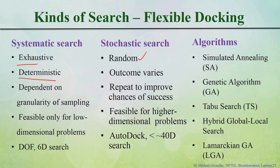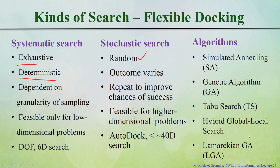The differences between systematic search and stochastic search: stochastic is random, systematic is exhaustive. Systematic can get the exact pose the ligand prefers to bind, but the stochastic outcome will change. Systematic depends on the granularity of your sampling - what angle increment you use. Stochastic can repeat to improve the chance of success and is feasible for higher dimensions. For the stochastic search, various algorithms have been proposed for sampling: simulated annealing, genetic algorithm, taboo search, hybrid global-local search, and Lamarckian GA algorithm.